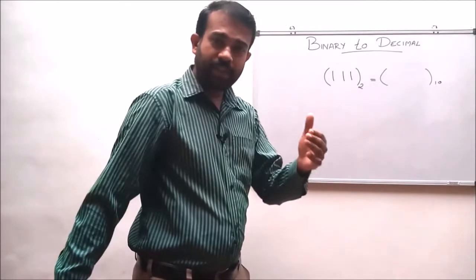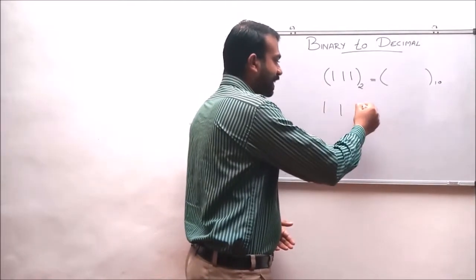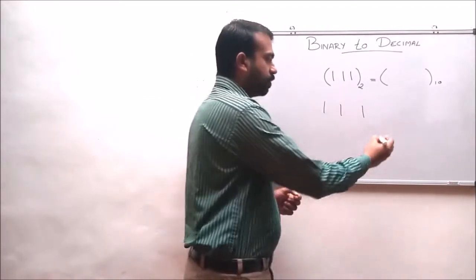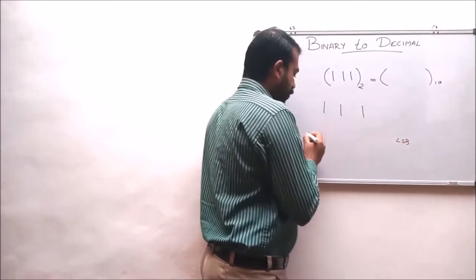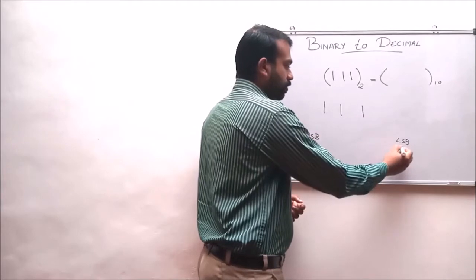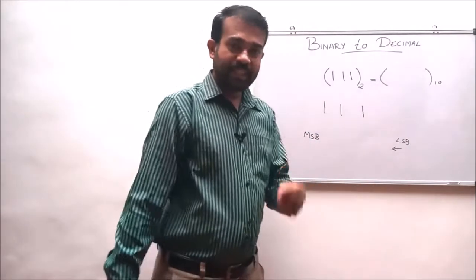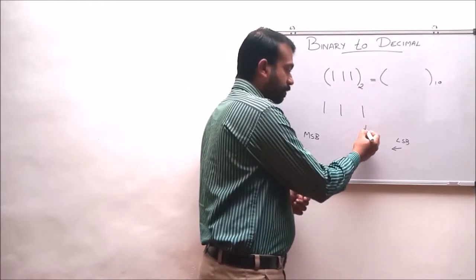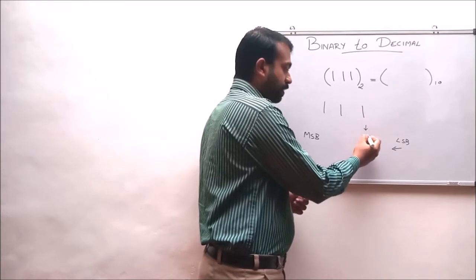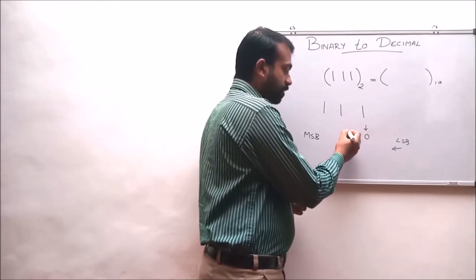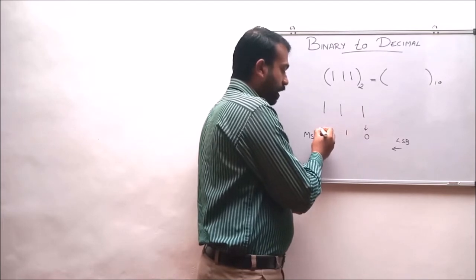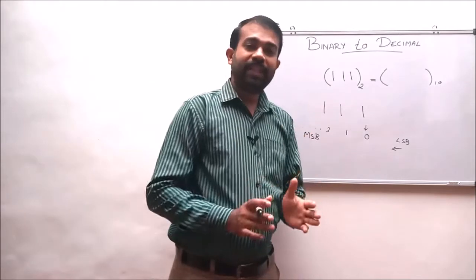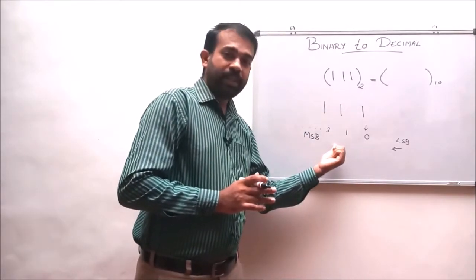Before converting, we have to know the digit position of each number. We think about digit positions from the LSB to the MSB — from the least significant bit to the most significant bit. For any number, the least significant bit's digit position is 0, the next is 1, then 2, and so on moving to the leftmost positions.